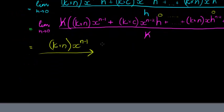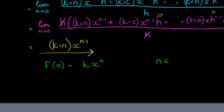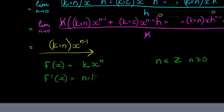So let's summarize. If f(x) = k·x^n, where n is an integer and n ≥ 0, then the derivative f'(x) = n·k·x^(n-1). What appears to have happened: we multiplied the exponent n with the coefficient k, and subtracted 1 from the exponent.